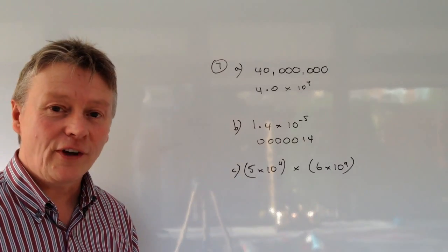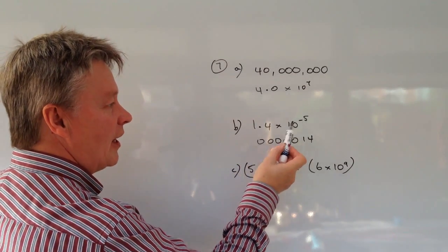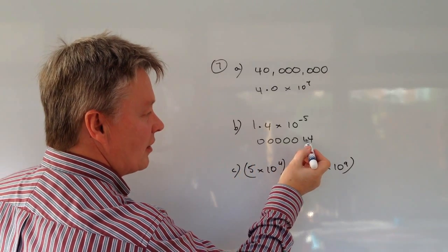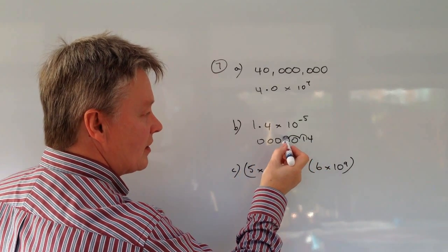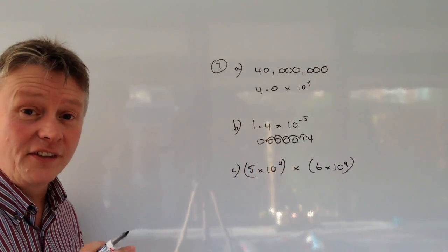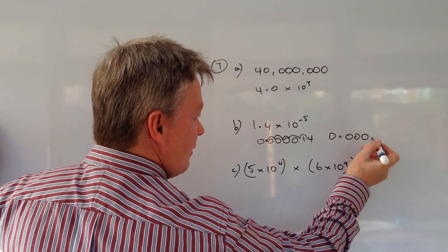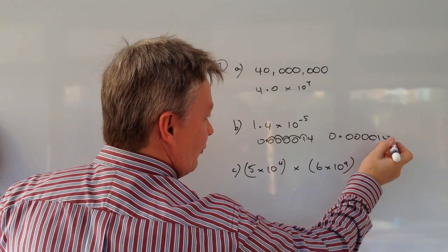So it's gone once, twice, 3, 4, 5 places. So the answer of this particular question would be 0.000014.